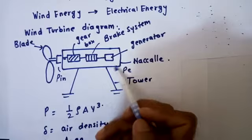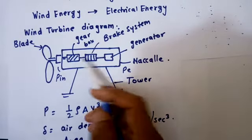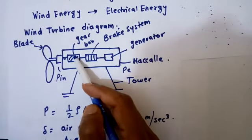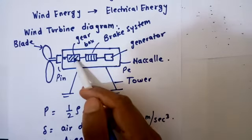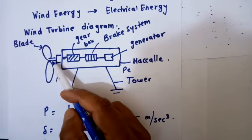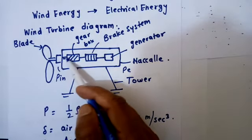Then we have the nacelle. The nacelle is a combination of three parts: first is the gearbox, next is the brake system, and third is the generator. The gearbox means that whatever speed is coming from the wind side, that speed can be changed to the desired speed.